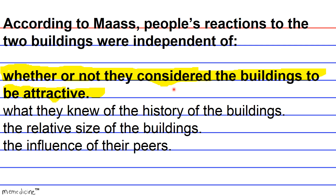The passage states that participants reported greater discomfort when familiar with the two buildings, suggesting that knowing the history could influence reactions — so B is wrong. No argument is made that history did not influence reactions. The passage indicates that size likely contributed to reactions, creating the overall impression of intimidation — so C is wrong. As for peer influence, people were asked to imagine accompanying a friend, but it's unclear if reactions were dependent or independent of their peers — we can't make assumptions, so D is also wrong.